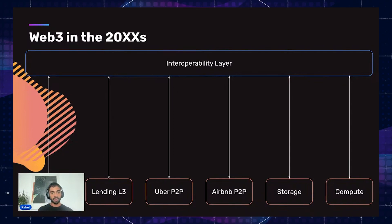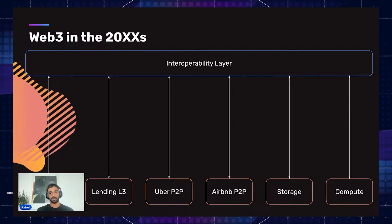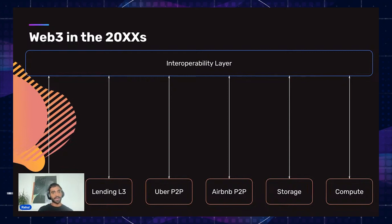I strongly believe that a lot of things will move to different siloed layer 3s, where they can control more mechanisms. You'll have a swap layer 3, a lending layer 3, and eventually Uber and Airbnb will become peer-to-peer applications living on their own layer 3s. You'll also have storage and decentralized compute running as decentralized services. Our vision is that all of these will be connected by an interoperability layer, making these interactions extremely abstracted from users themselves.